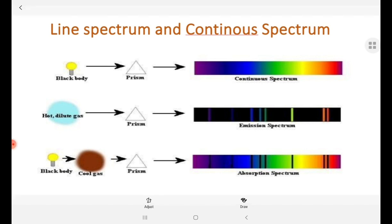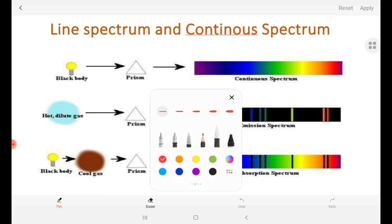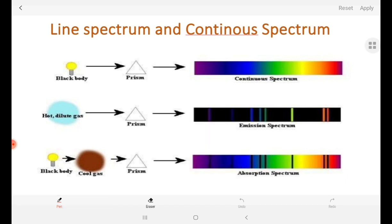Line spectrum and continuous spectrum. Continuous spectrum - when the white light is dispersed, it is seven colors. The best example for continuous spectrum is rainbow.